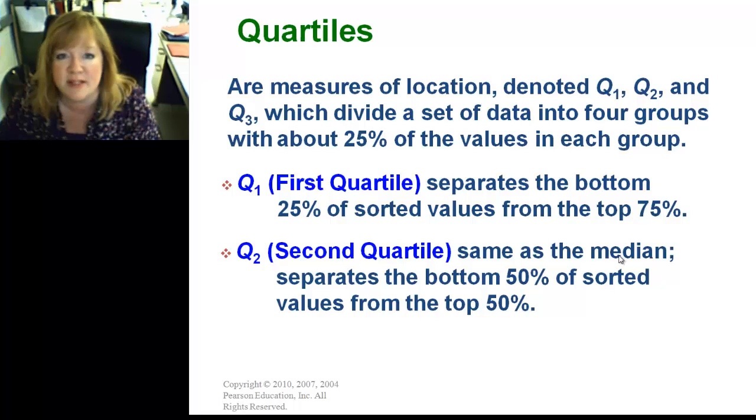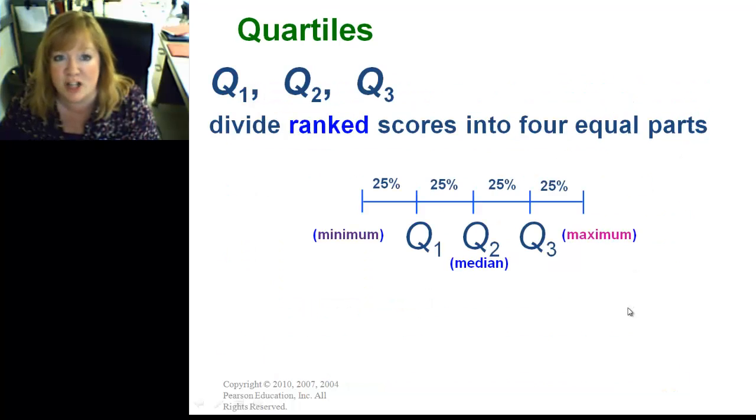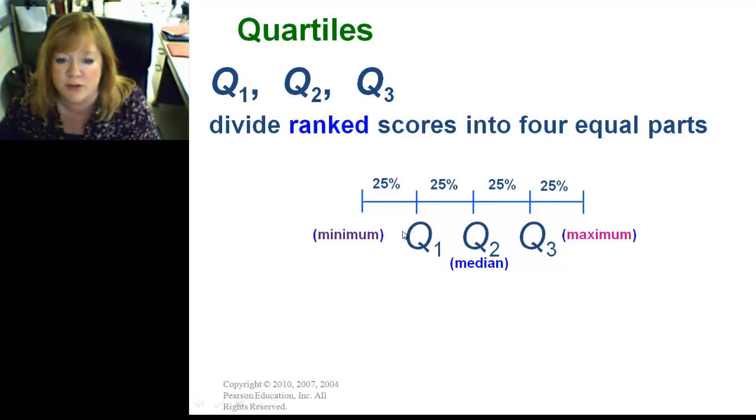Second quartile is the same as the median. Those are identical to each other, and it separates the bottom 50% of sorted values from the top 50%. The third quartile separates the bottom 75% of the sorted values from the top 25%. Let's take a visual look at this, shall we? Oh, yeah! So, here's the quartiles, 1, 2, and 3. Divide ranked scores into four equal parts. Ranked means we're going to have to put our values in order from low to high. So, here's our minimum value and our maximum value. And what the quartiles are is it just takes some sections off your data into four sections. And so, you can see here's quartile 1, the minimum to the Q1, then Q1 to Q2, which is your median, and Q3 to the maximum. So, there's your four parts.